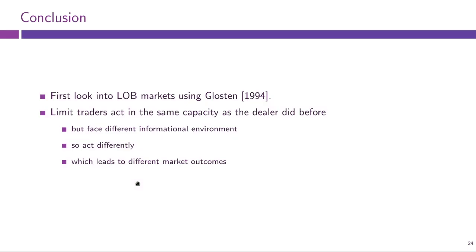This is pretty much it for today. We had our first look into order-driven markets using the Glosten model, and we saw that limit traders effectively fill the shoes of dealers — fulfilling the same role of liquidity provision, but facing a different informational environment which leads them to act differently. The price schedule they generate differs from what a dealer would have generated.